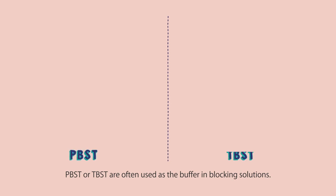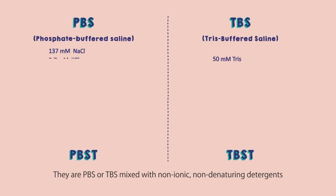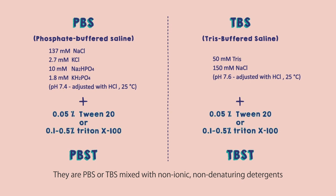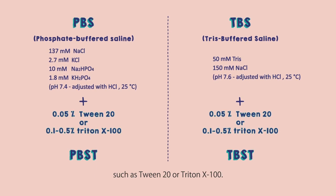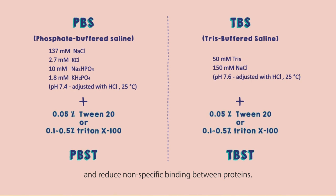PBST or TBST are often used as the buffer in blocking solutions. They are PBS or TBS mixed with non-ionic, non-denaturing detergents such as Tween 20 or Triton X-100. PBST and TBST can interfere with hydrophobic interactions and reduce non-specific binding between proteins.